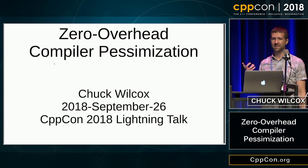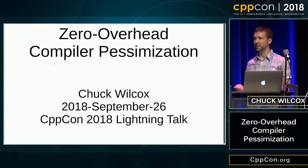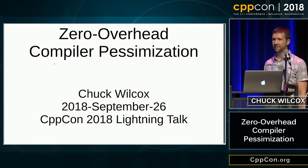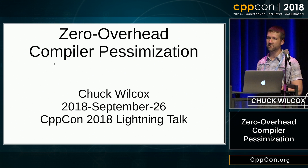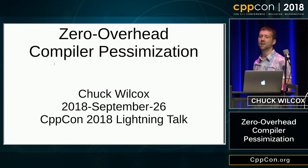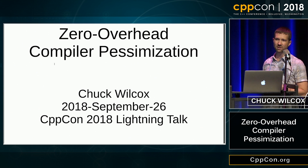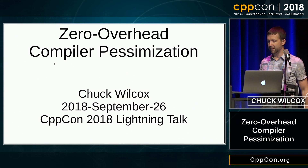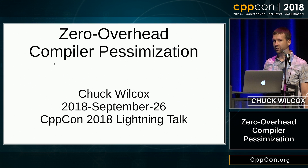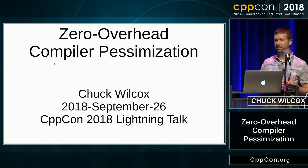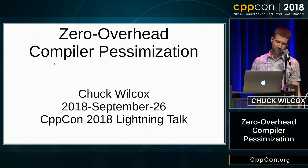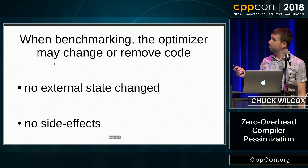I can think of at least three cases where you would want to do this. The first one is atomic operations, where you're telling the compiler not to do certain optimizations that would interfere with inter-process communication. Anyone who's used the standard atomic library, this is effectively what you're telling the compiler to partially do. The other case is the new attribute likely and unlikely on branches. But I'm not here to talk about either of those two today — I'm here to talk about benchmarking.